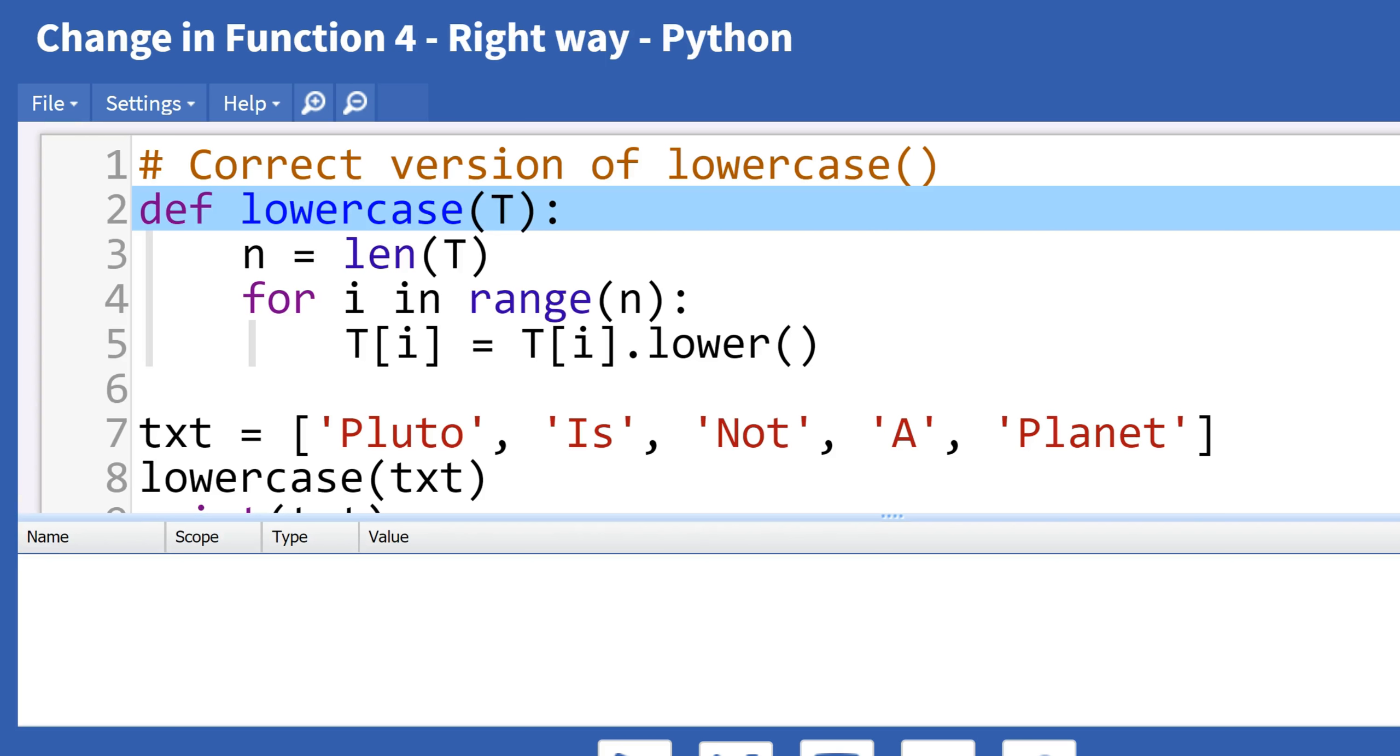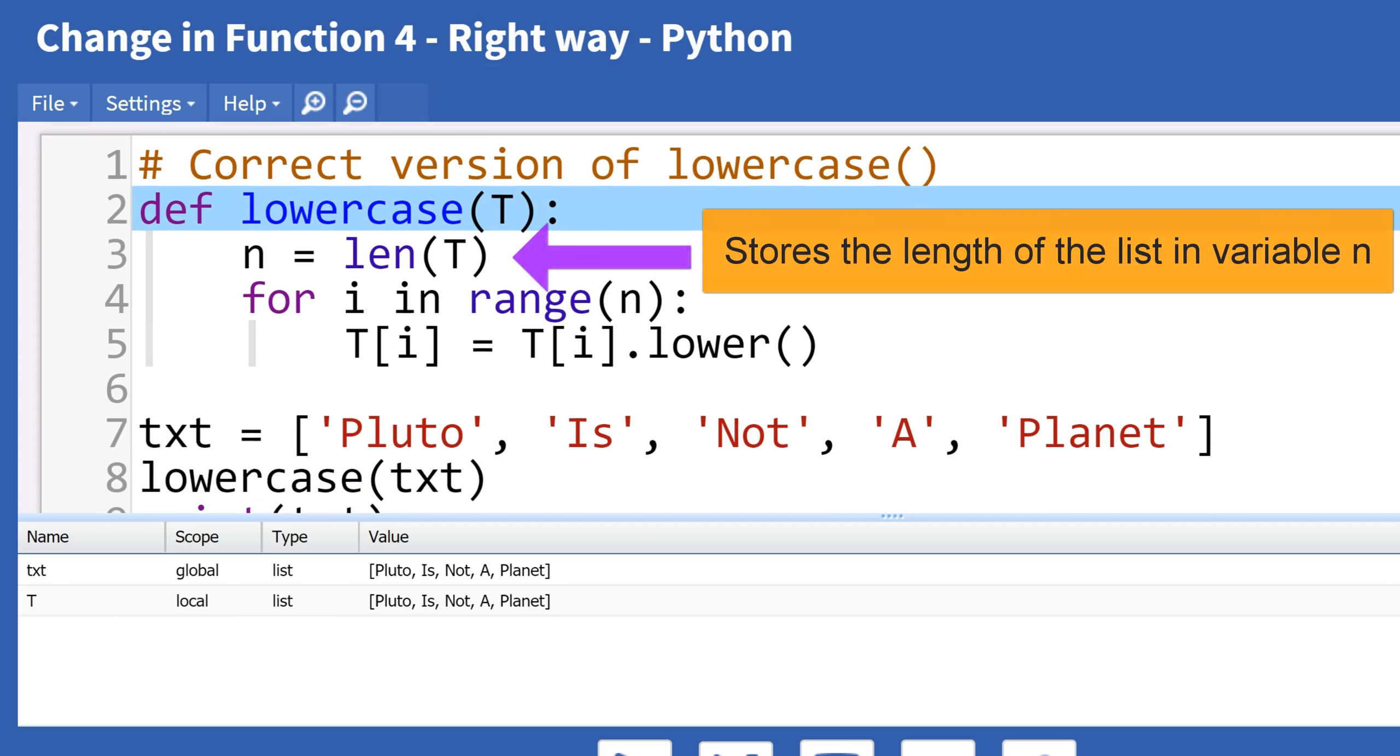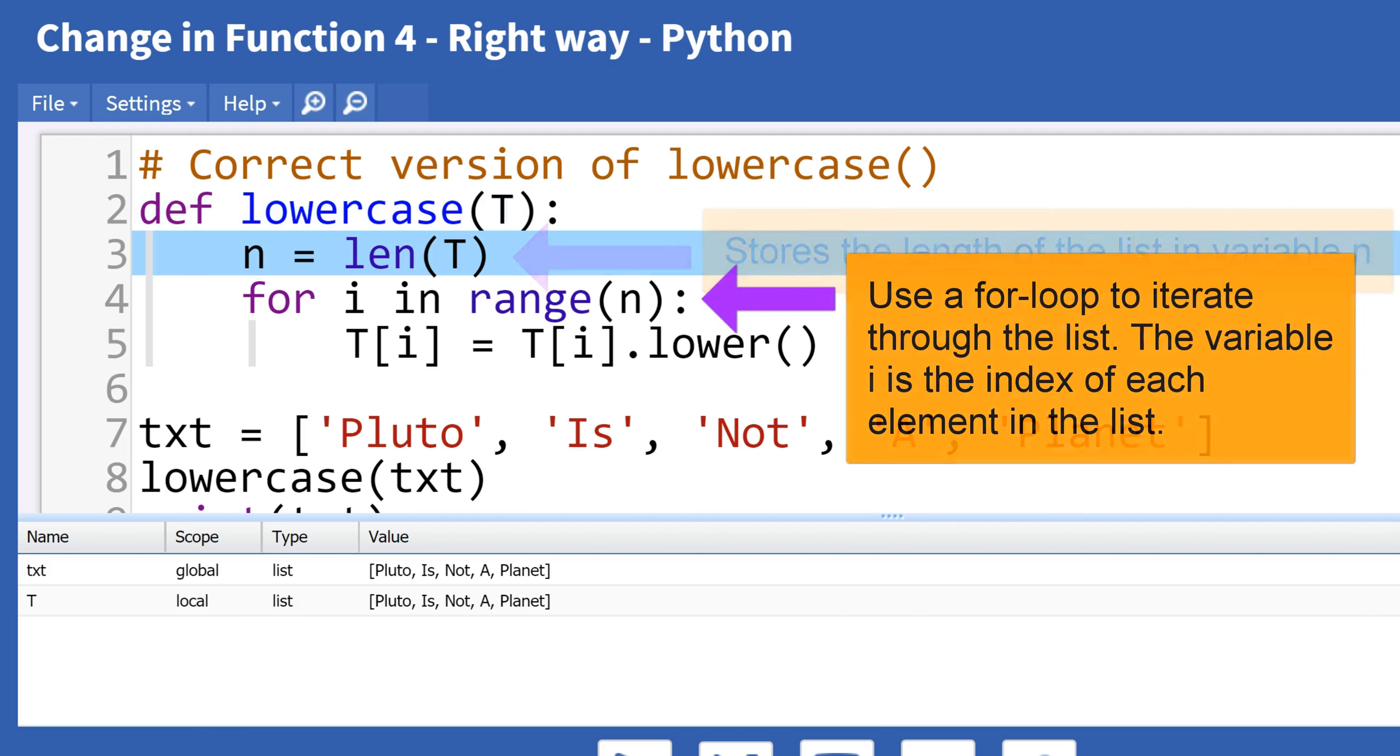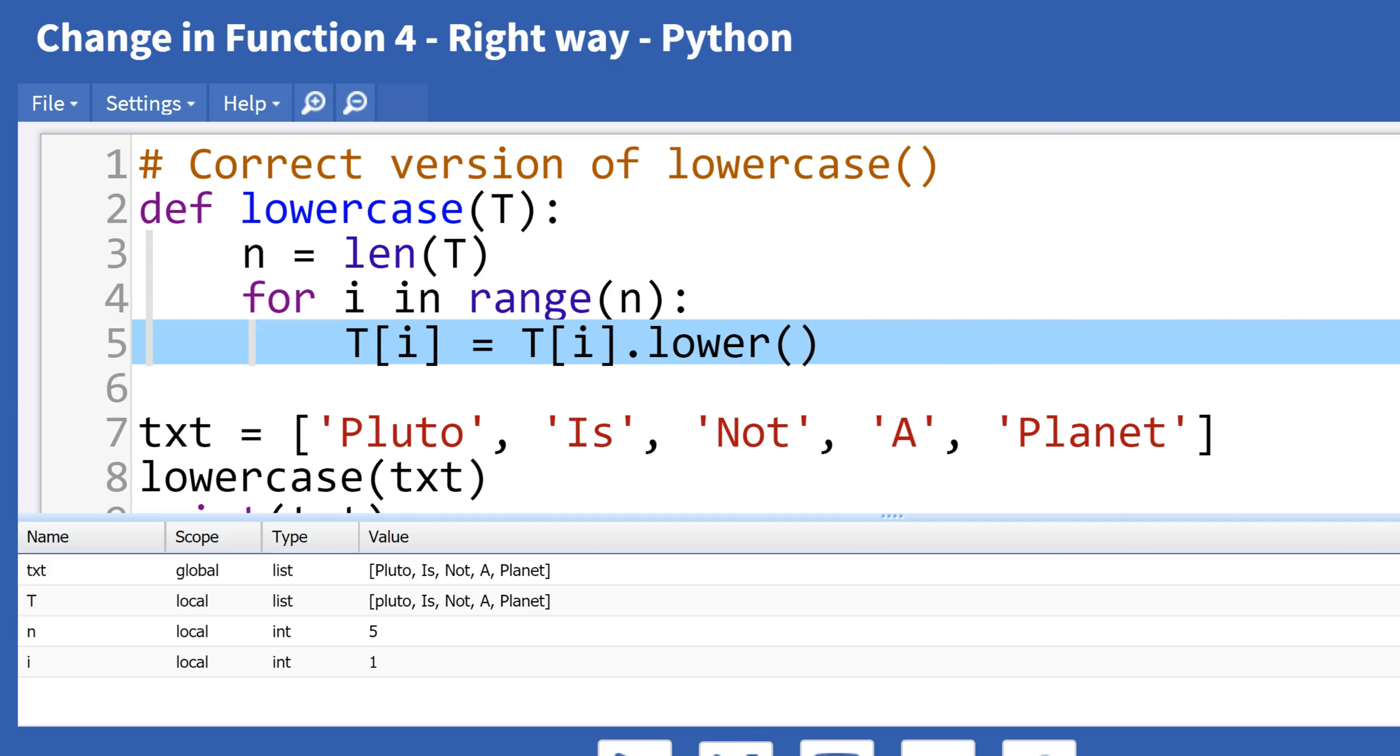Now let's try a different approach. In this case, we defined a local list, then used the lower method on each item via the index. Lists are mutable, so our function can change the list.